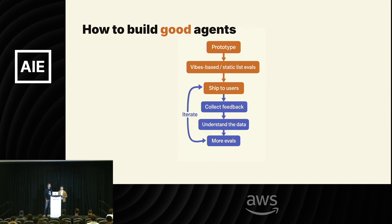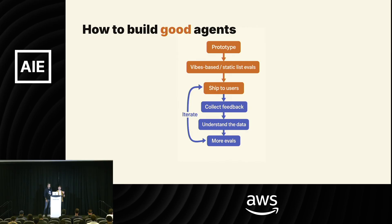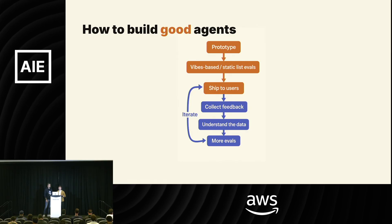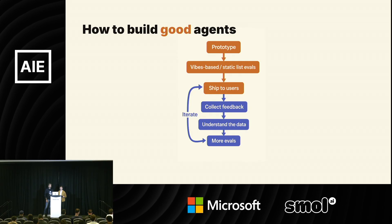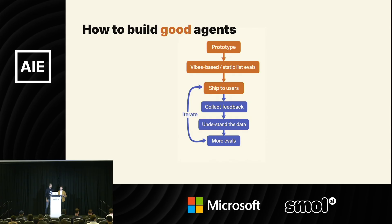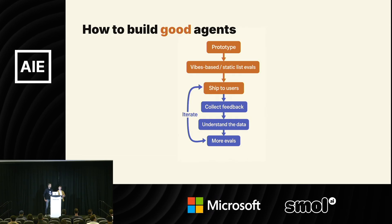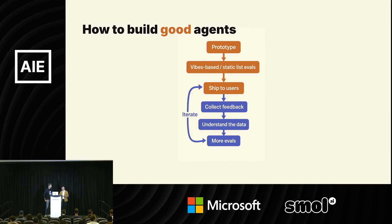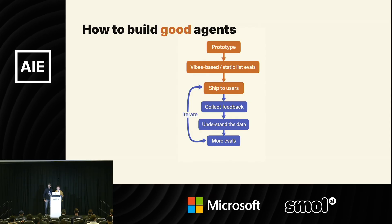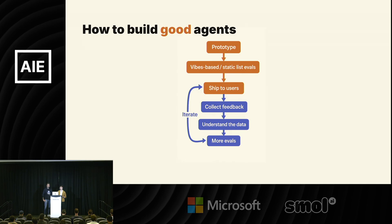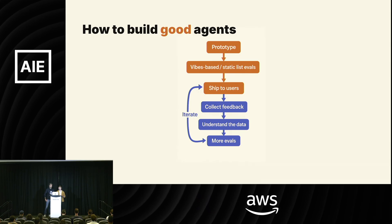You start to understand the usage patterns and the failures, so you can build more evals and build an understanding of what's failing and what the use cases are. As you build more evals and ship features, your product gets better, you get more users, there are more failures, you build more features — and on and on. It forms this data flywheel, starting with the first step.